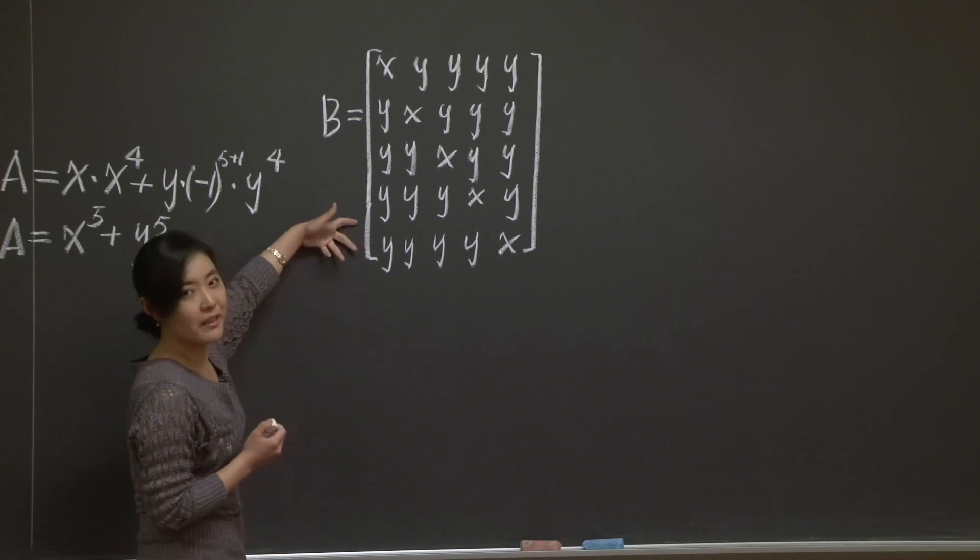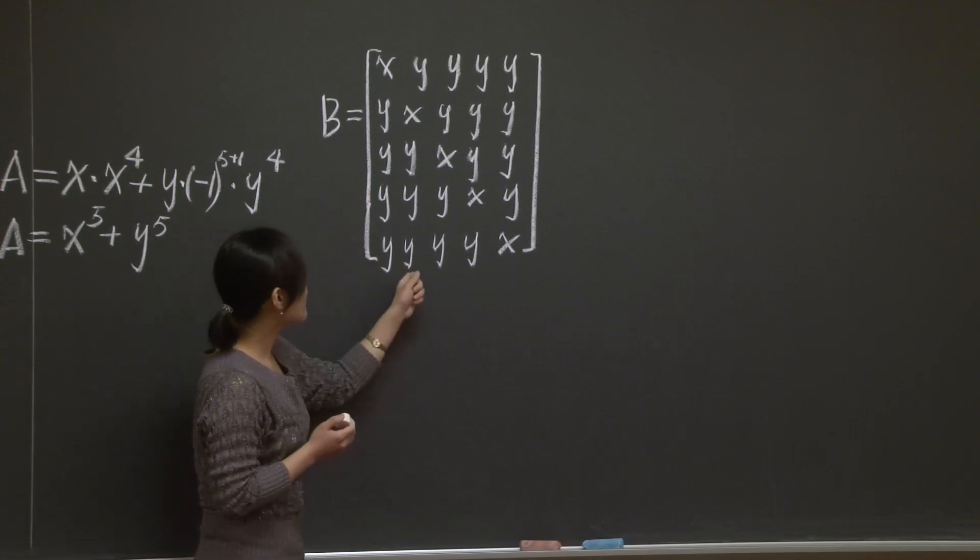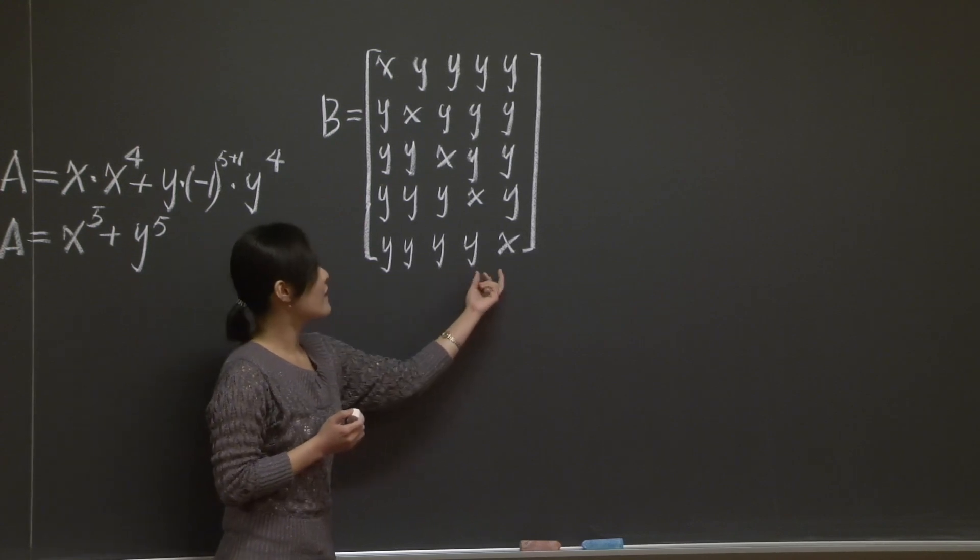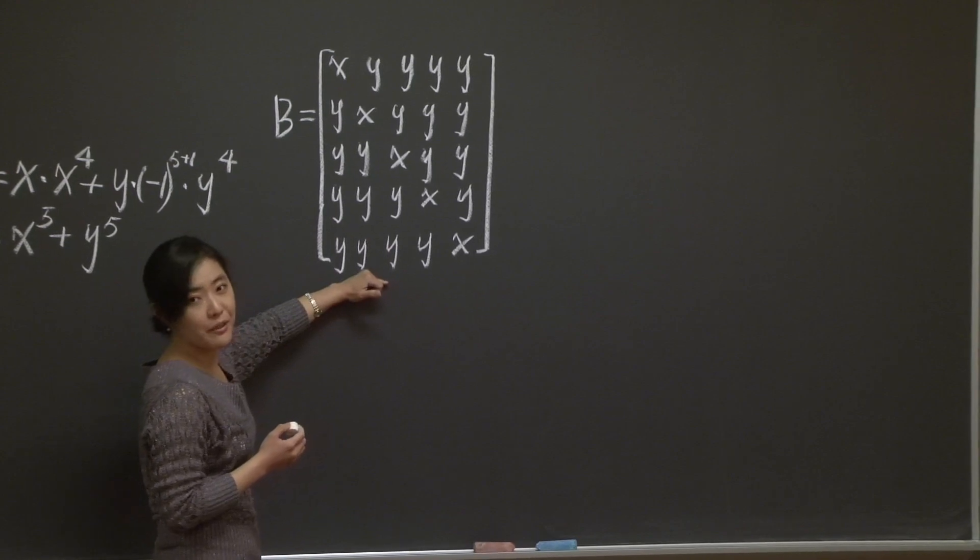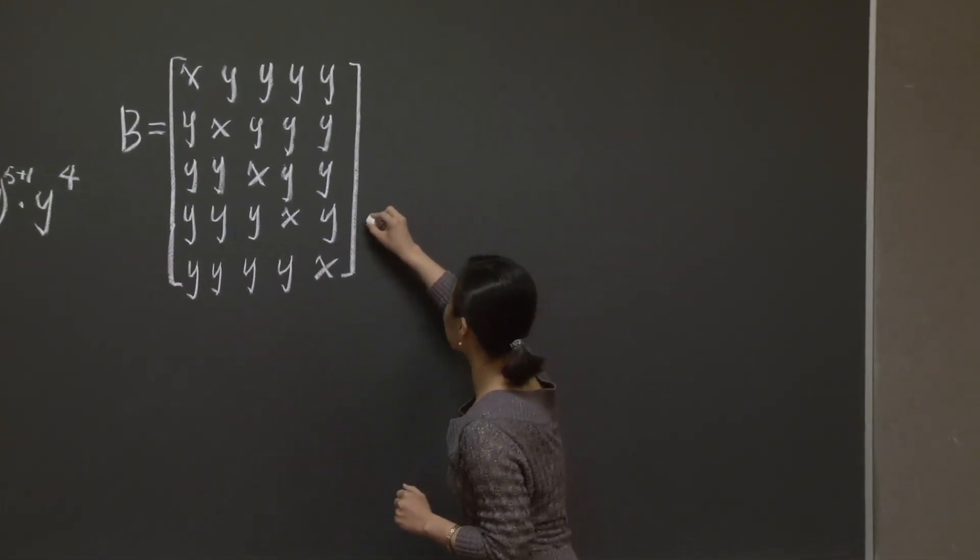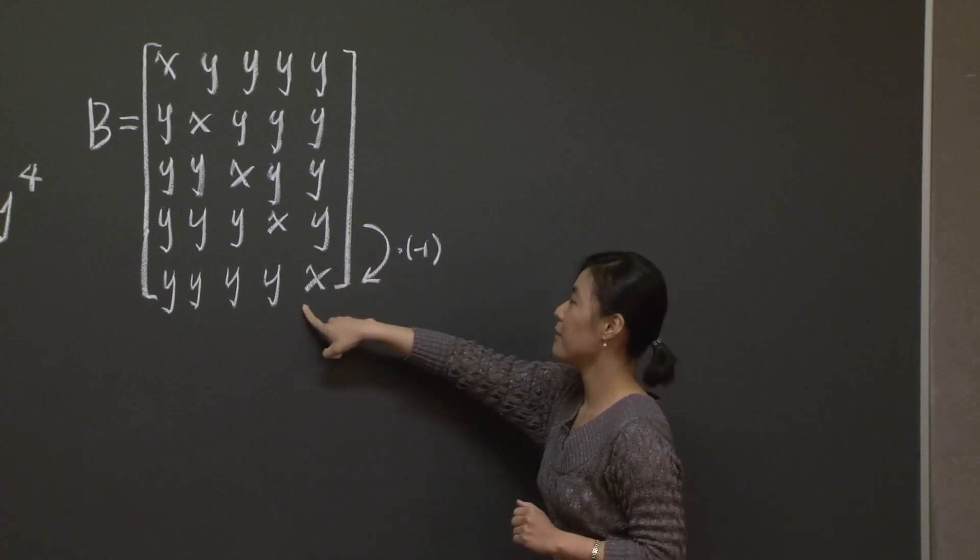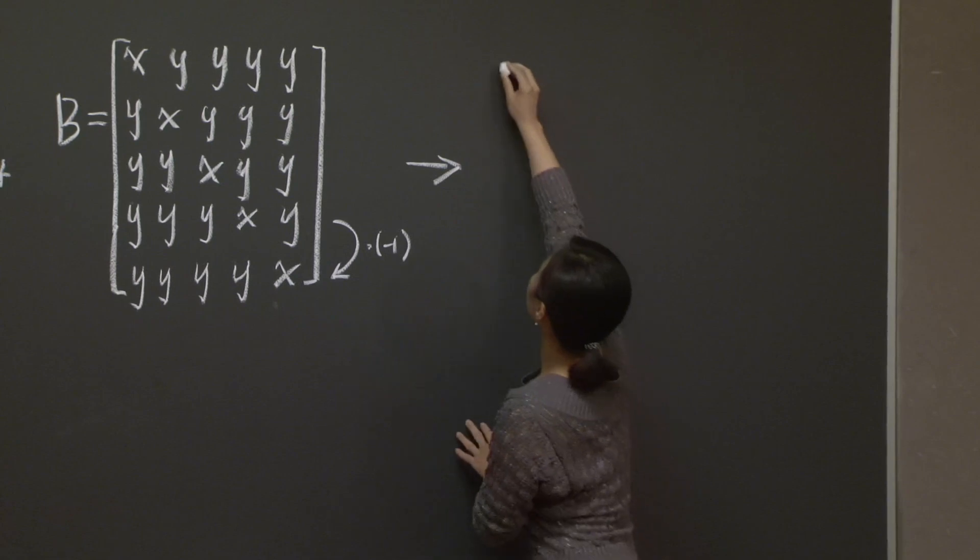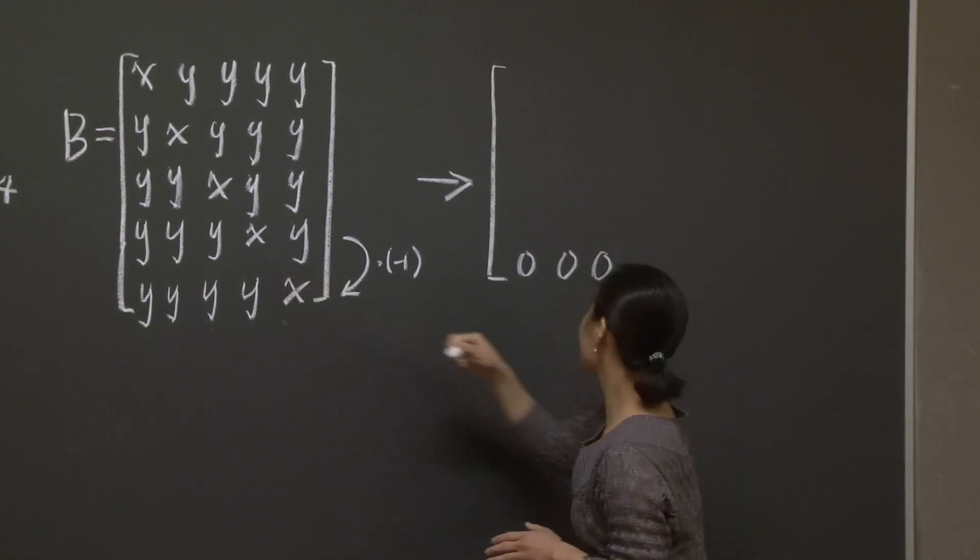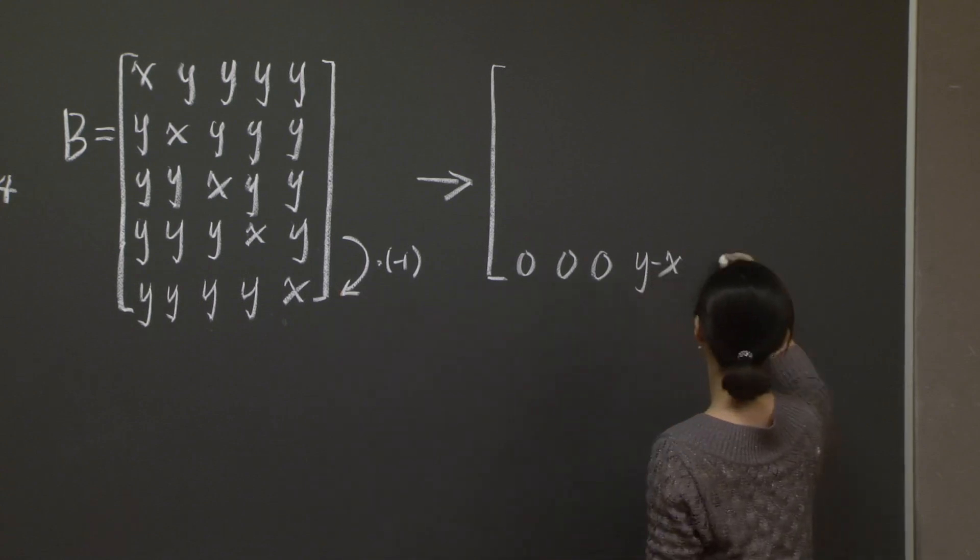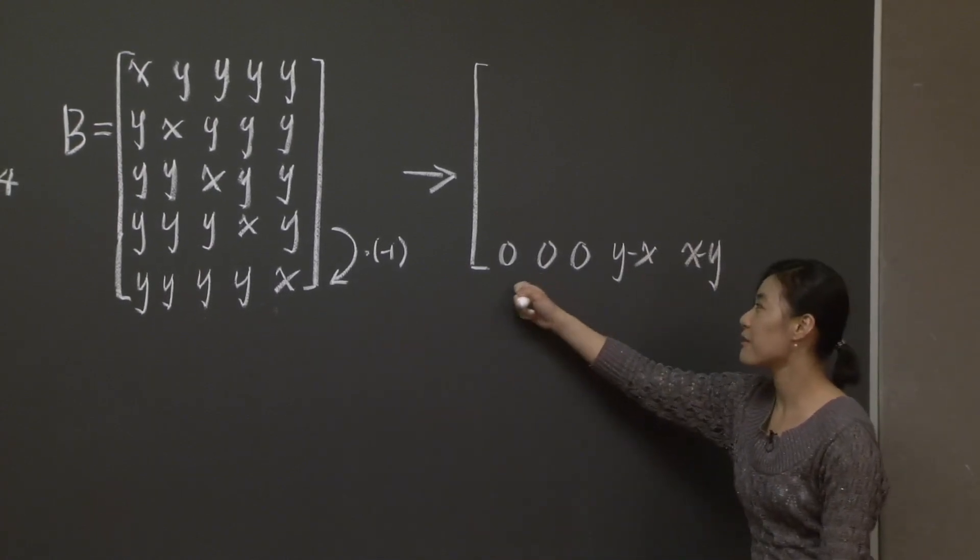If you compare two rows that are next to each other, for example, if you compare the fourth row and the fifth row, you notice that they have a lot of entries in common. And they're only different at these two spots. So imagine if I subtract the fourth row from the fifth row. So if I do the following cooperation, then the new fifth row should become 0, 0, 0, y minus x, x minus y. You see, just by the simple operation, I have introduced three zero entries at once.